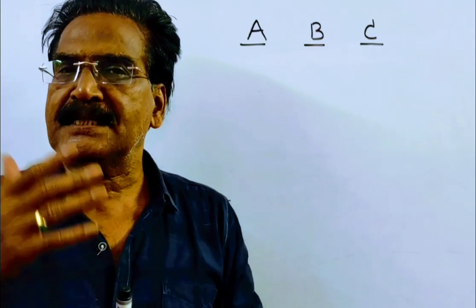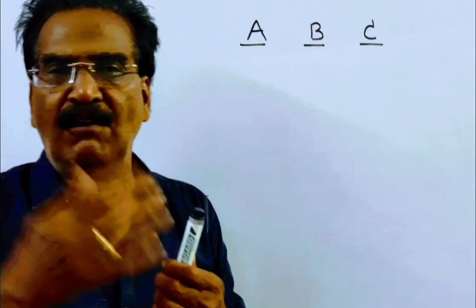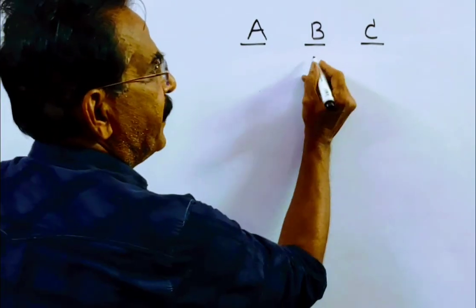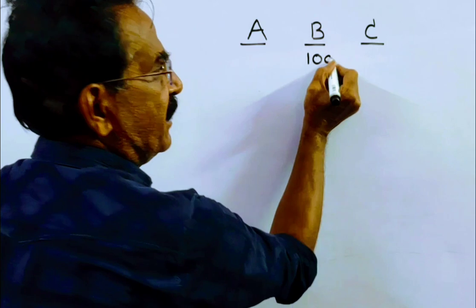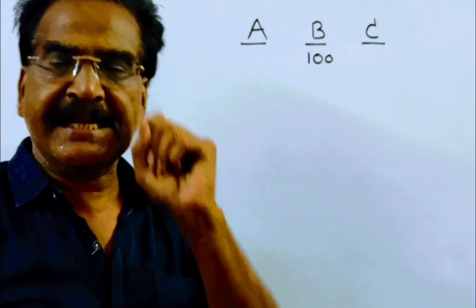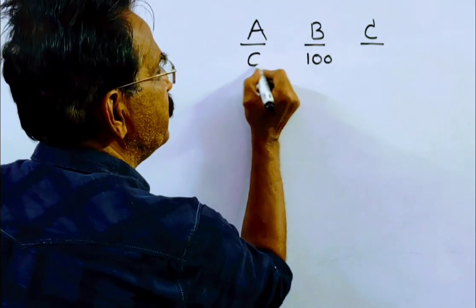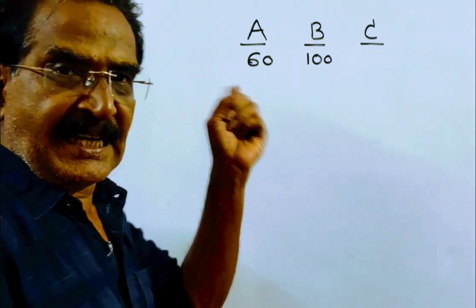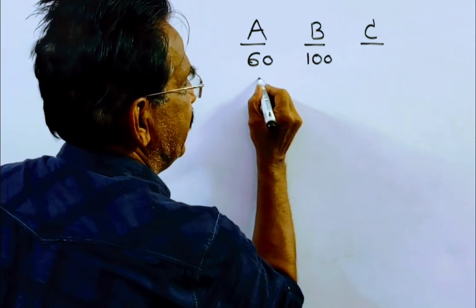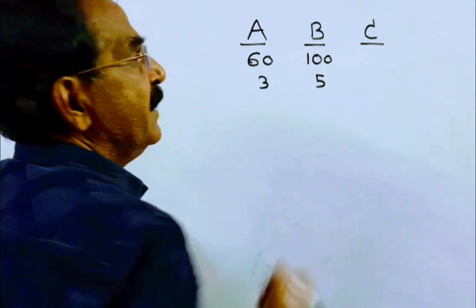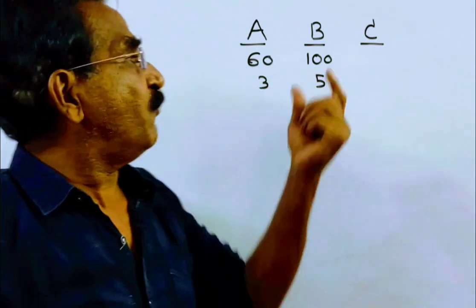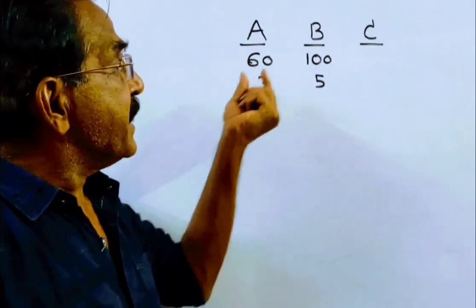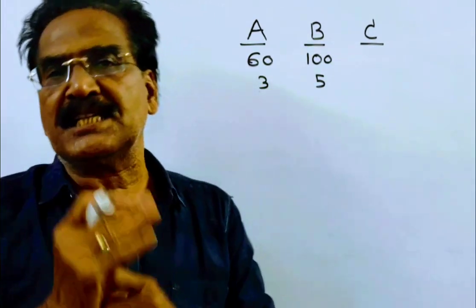See friends, A is 40% less efficient than B. What does it imply? If B can do 100 units of work per day, then A can do only 60 units of work per day. In other words, that means if B can do 5 units of work per day, A can do only 3 units of work per day.